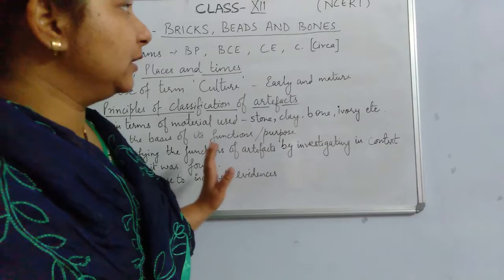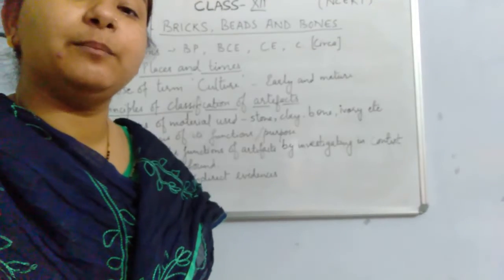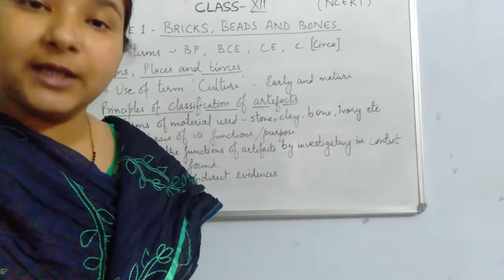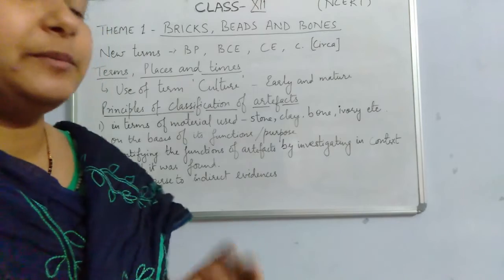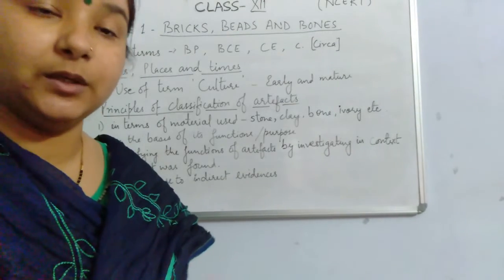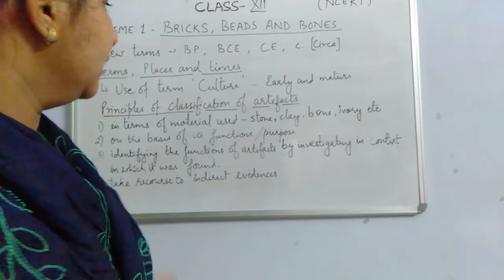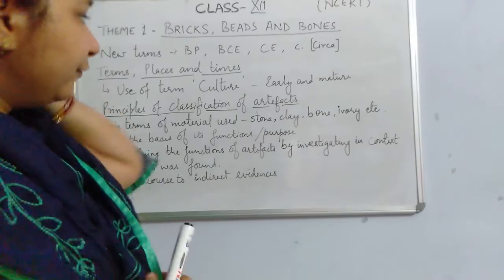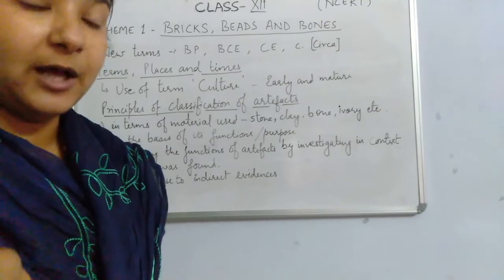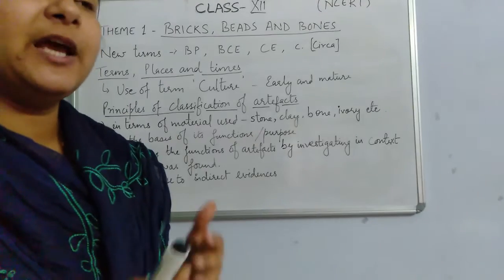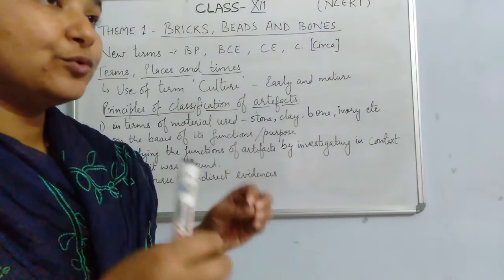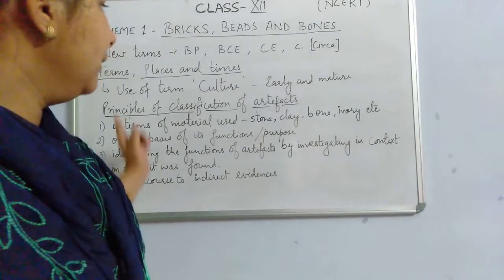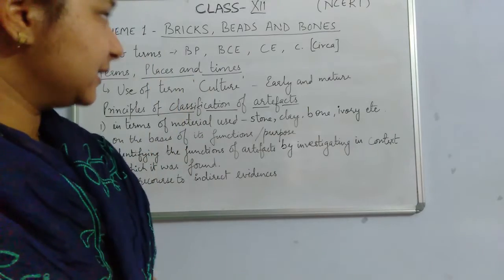Reconstructing the past is a very challenging task for historians, because many times direct evidences are not available for a particular time period. These clues — indirect evidences — are what historians use to construct the history of a past period. This is a very basic but important aspect of studying history: investigating these clues properly is a very challenging task. This concludes the topic of Terms, Places and Times as given in the book.